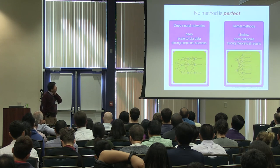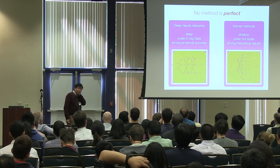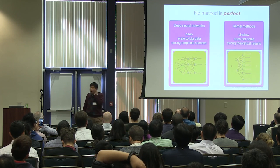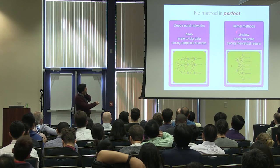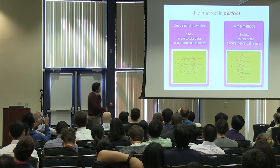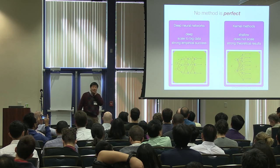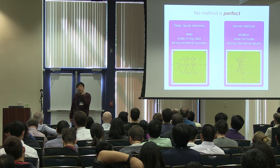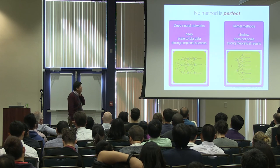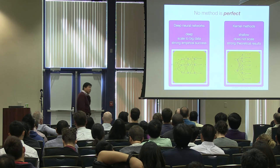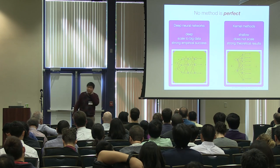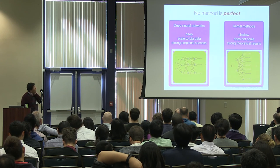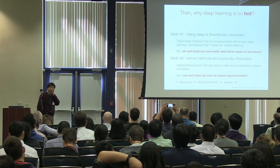No method is perfect. On one side you have deep neural networks: they're deep, powerful, and tend to scale to big data more easily. On the other side, kernel methods are shallow but have stronger and richer theoretical results that deep learning can only supplement with empirical results. The key message: nothing seems to be perfect — each has its pros and cons.